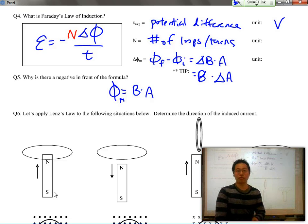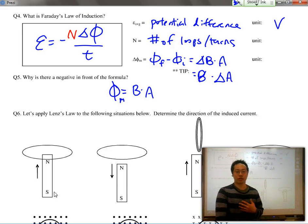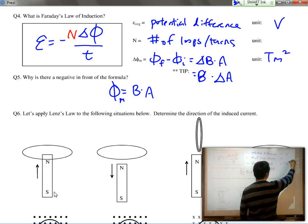And keeping in mind of course that the angle must be zero degrees in order for the magnetic field lines to pass straight through. And the unit for flux of course we've mentioned is tesla meters squared or Webers.